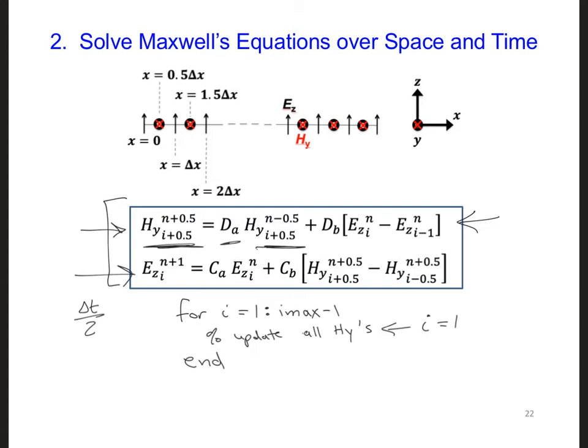However, the Hys also change in time. So right now, we just have i max minus 1 number of numbers in there. Do we instead need to define Hy to be a two-dimensional matrix?